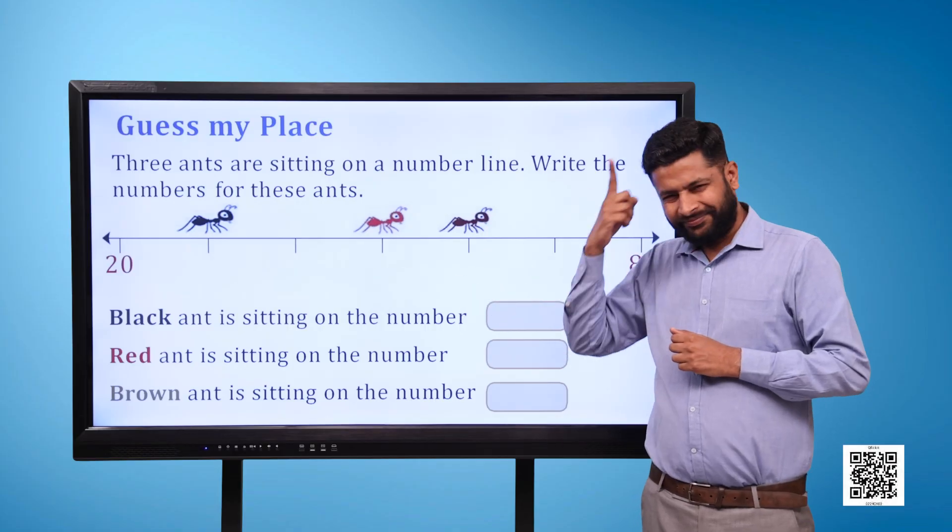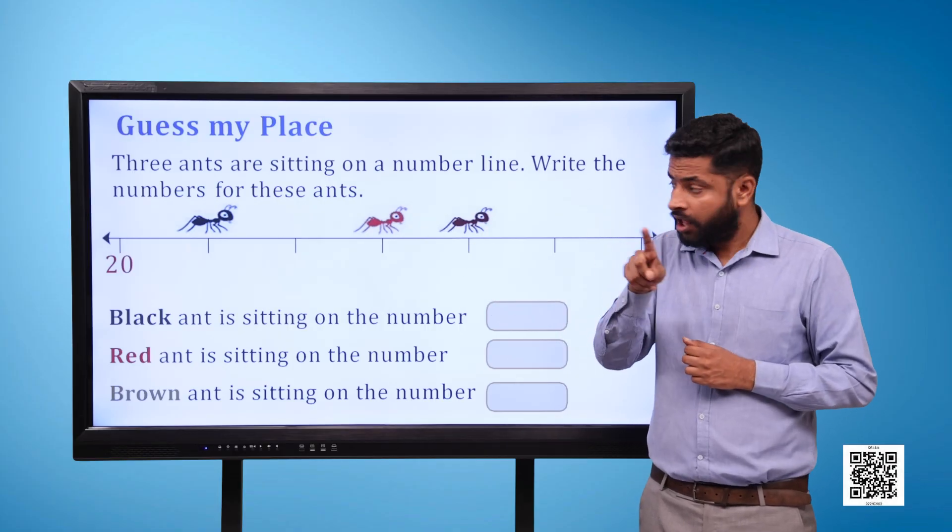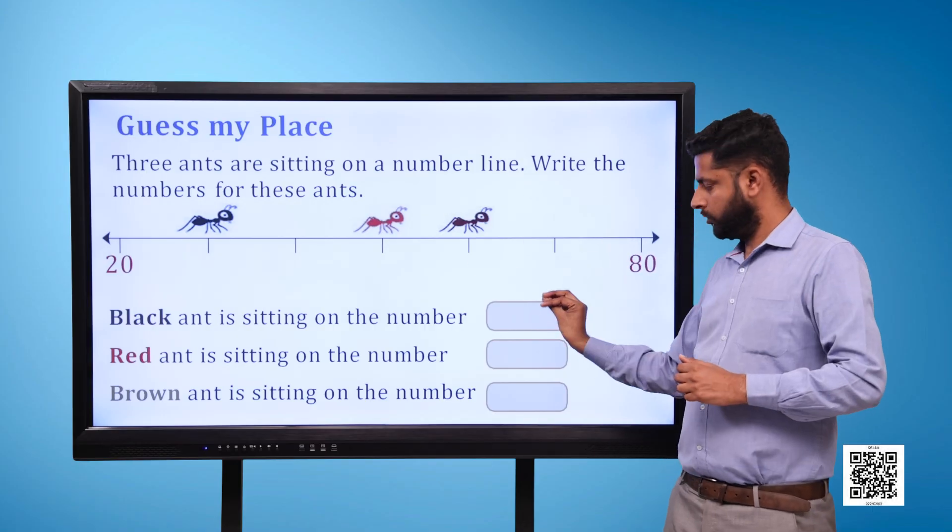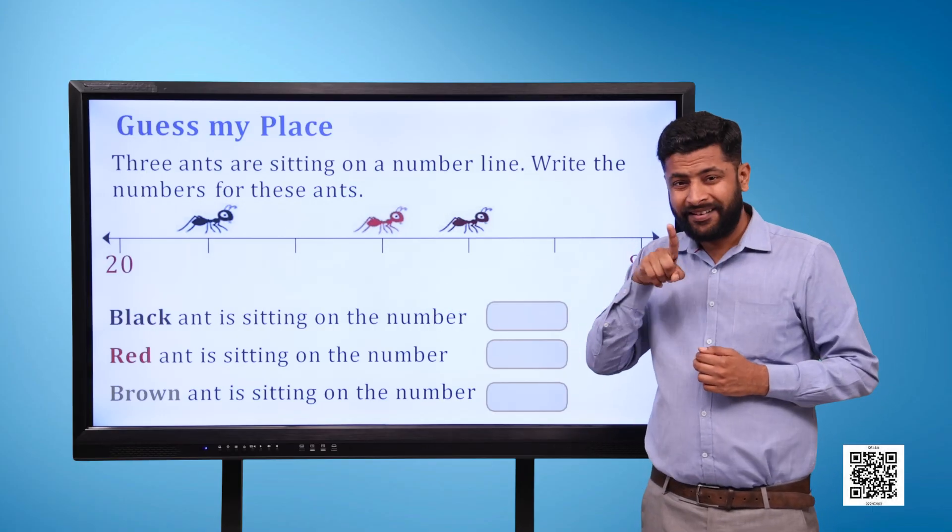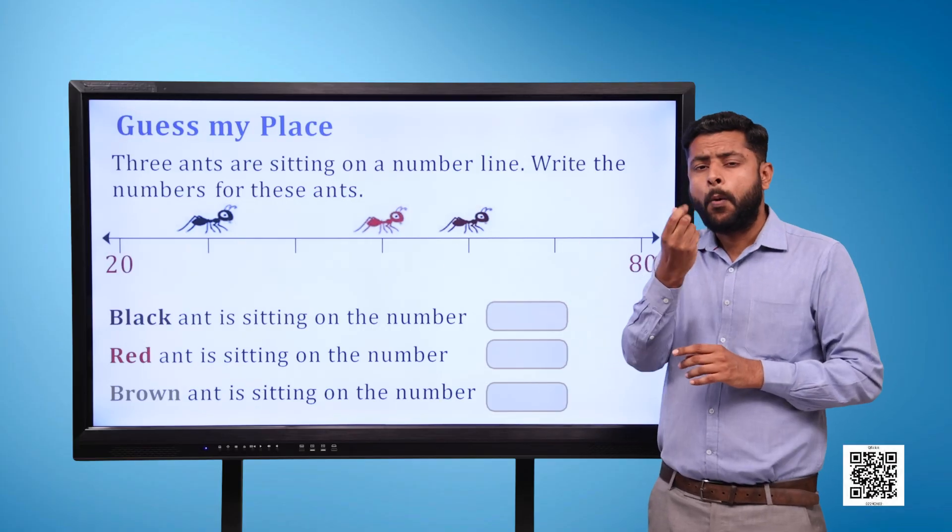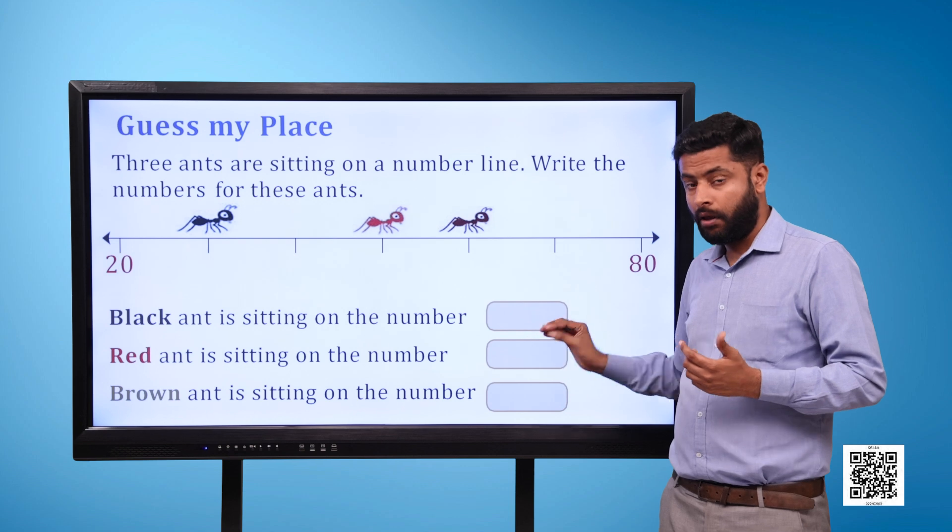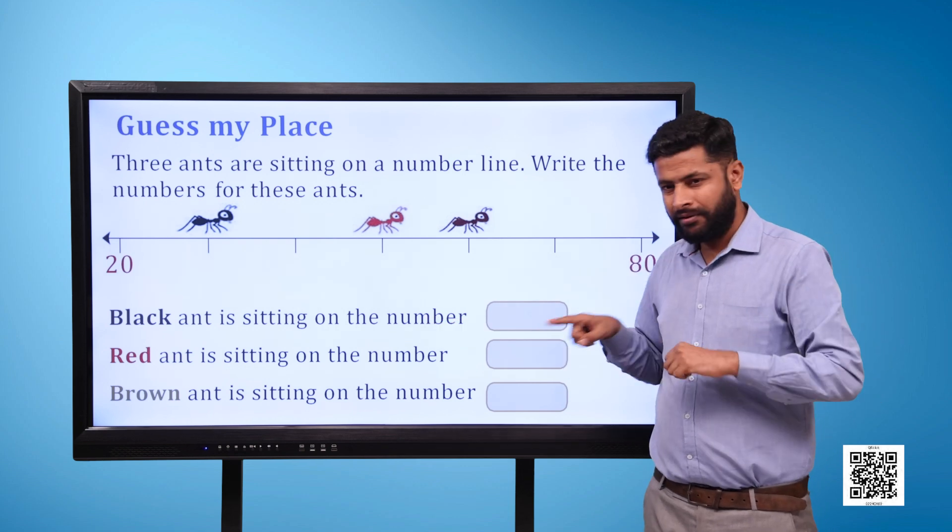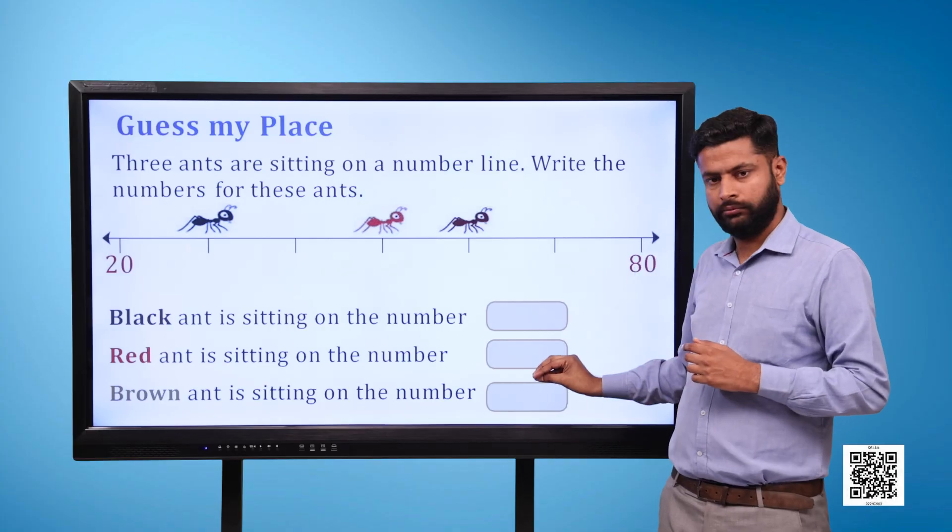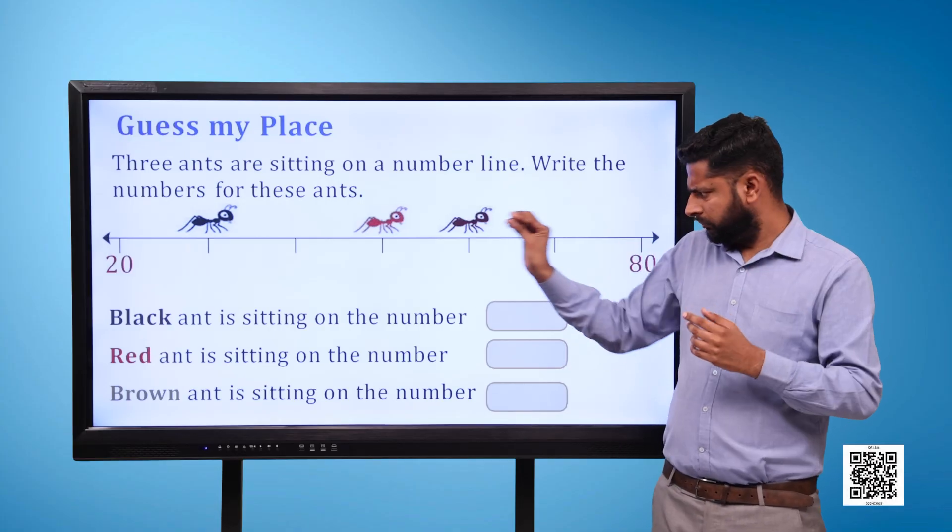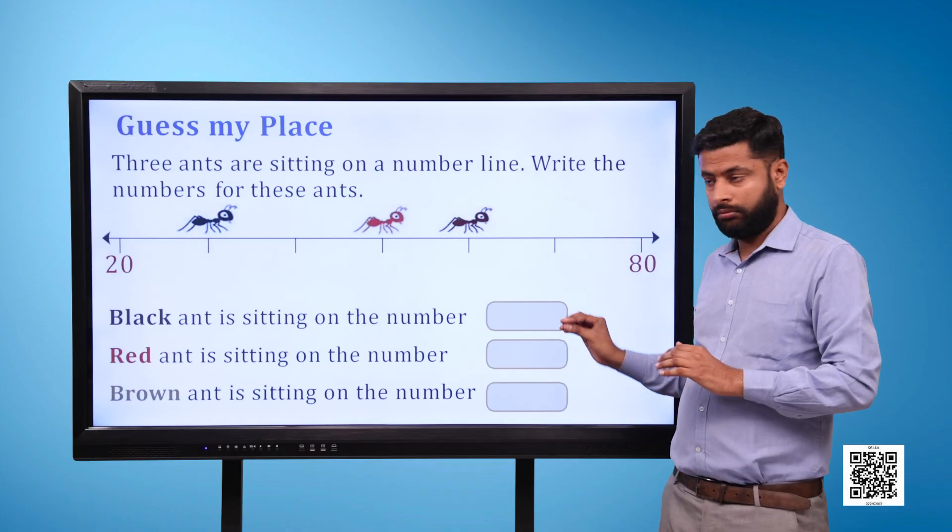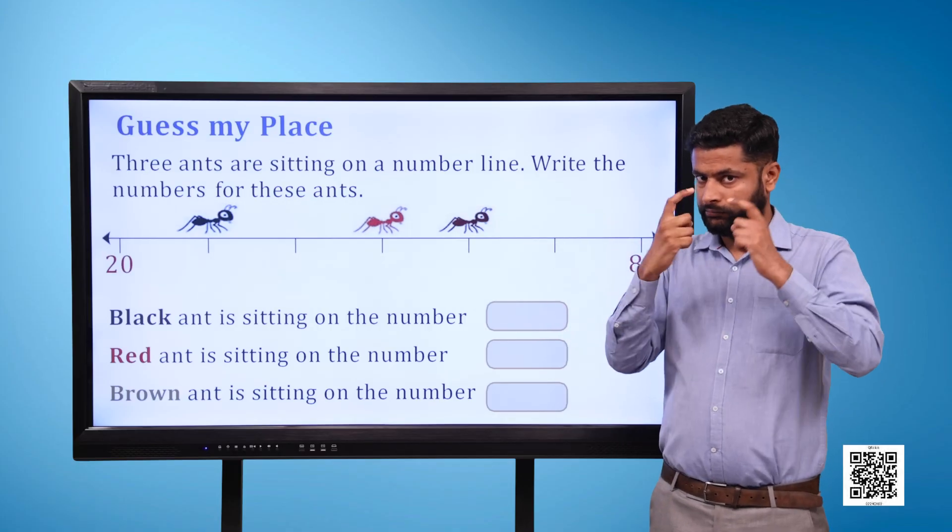On first point there is a black ant. On third point there is a red ant. On fourth point there is a brown ant. Black ant is sitting on the number blank, red ant is sitting on the number blank, brown ant is sitting on the number blank.